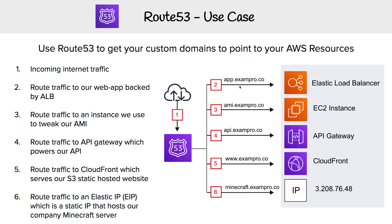For our app, it runs behind an Elastic Load Balancer. If we need to work on an AMI image, we could launch a single EC2 instance and point that subdomain there. For our API, if it was powered by API Gateway, we could use that subdomain for that. For our static website hosting, we would probably want to point to CloudFront, so the www subdomain points to a CloudFront distribution.